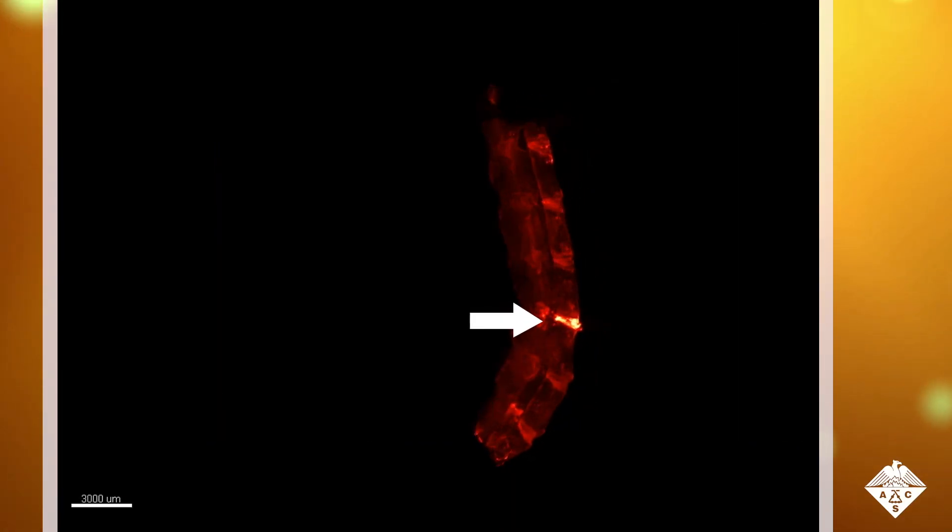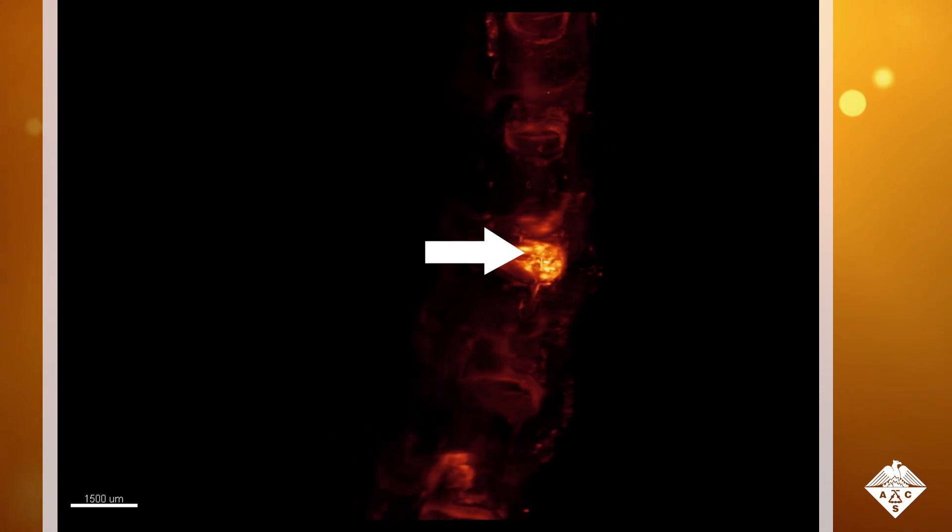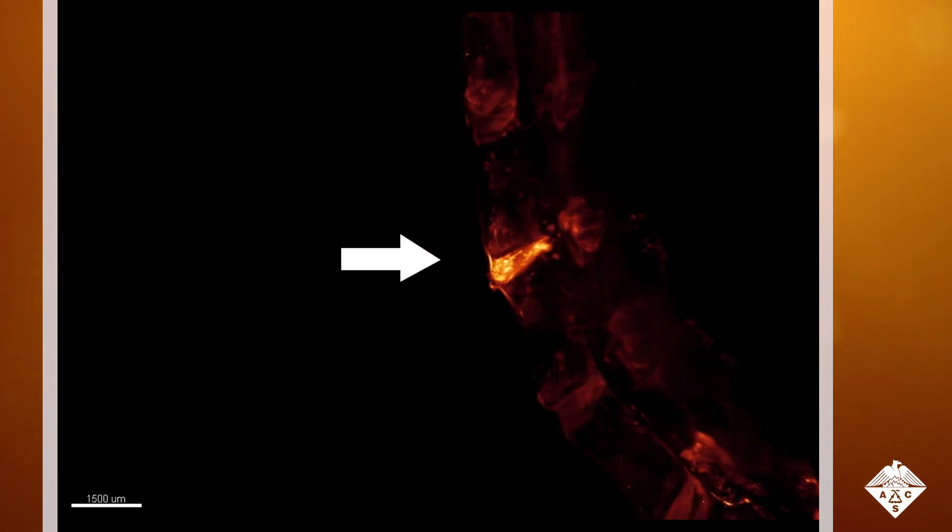Now, researchers reporting in ACS Nano have observed soft tissue destruction at the molecular level in animal spines. They did this by targeting denatured collagen proteins with fluorescent molecules.